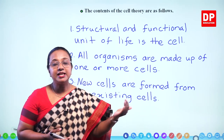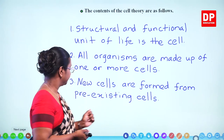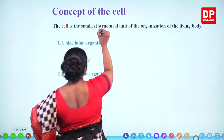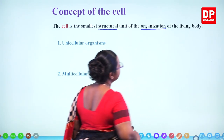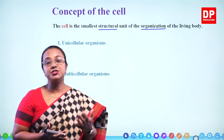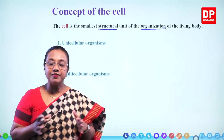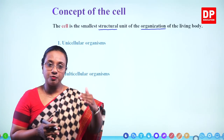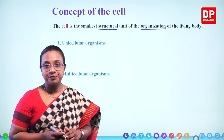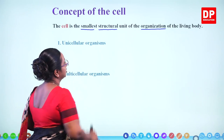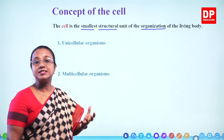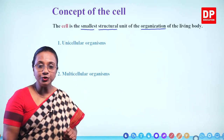Let us discuss the cell concept. The cell is the smallest structural unit of organization of the living body. When we look at the organizational levels of our body, it has different levels which are more complex, but the smallest simple unit is the cell. Based on the number of cells present, living organisms are divided into two main types: unicellular organisms and multicellular organisms.